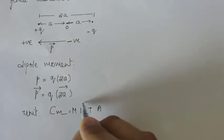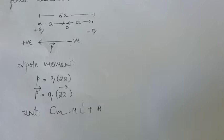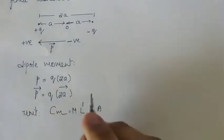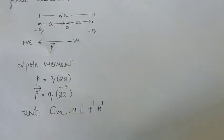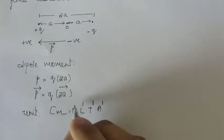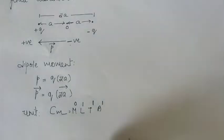The unit of dipole moment is Coulomb into meter. Its dimensional formula is M⁰ L¹ T¹ A¹.